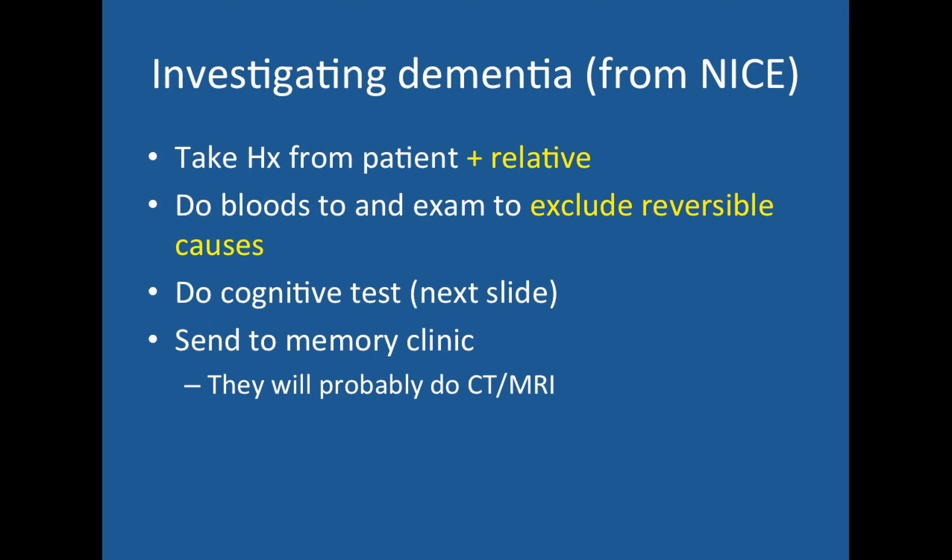To investigate dementia, take a history from the patient and a collateral history from a relative — that's really important. You need to exclude reversible causes with bloods and examination, then do a cognitive test. Once reversible causes are excluded and you're still suspicious of dementia, refer to the memory clinic, generally run by neurologists or geriatricians, who will consider cross-sectional imaging. On CT or MRI you might see global atrophy of the brain — deepening of the sulci and general loss of volume.